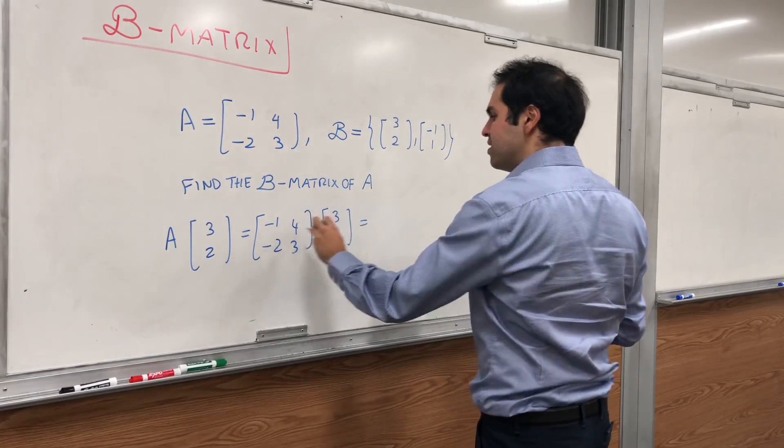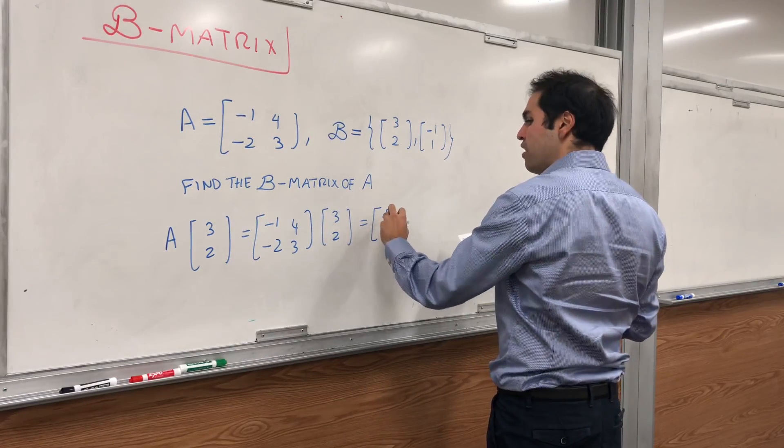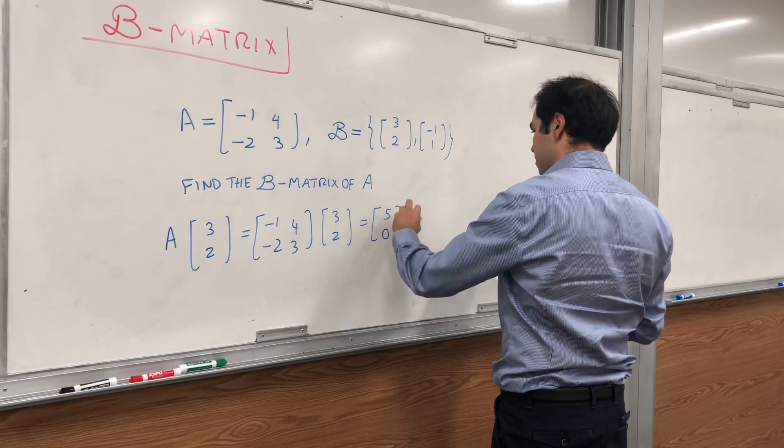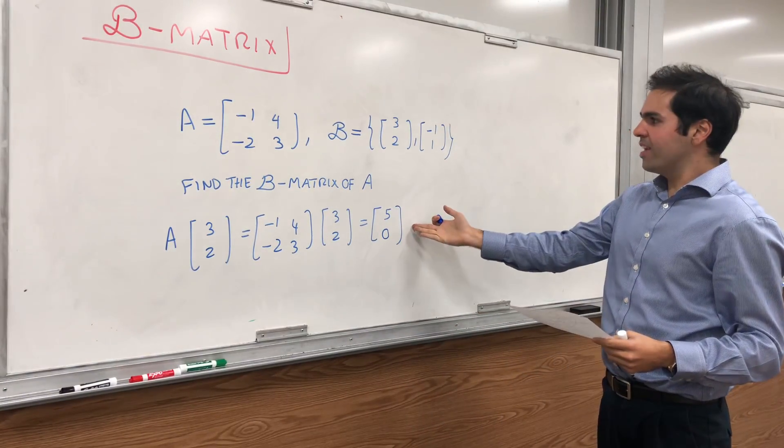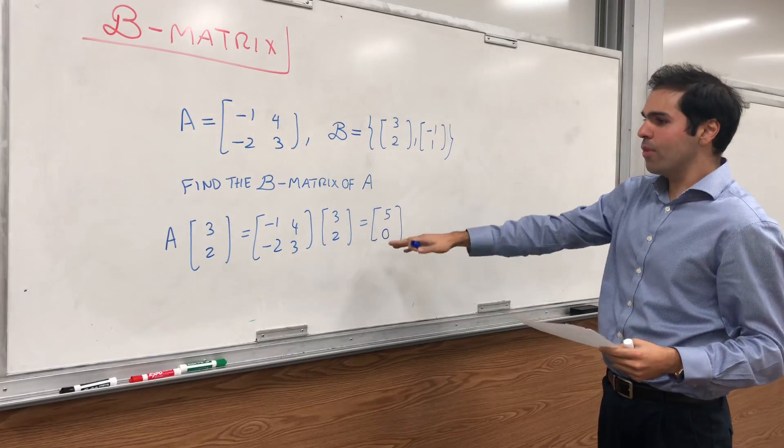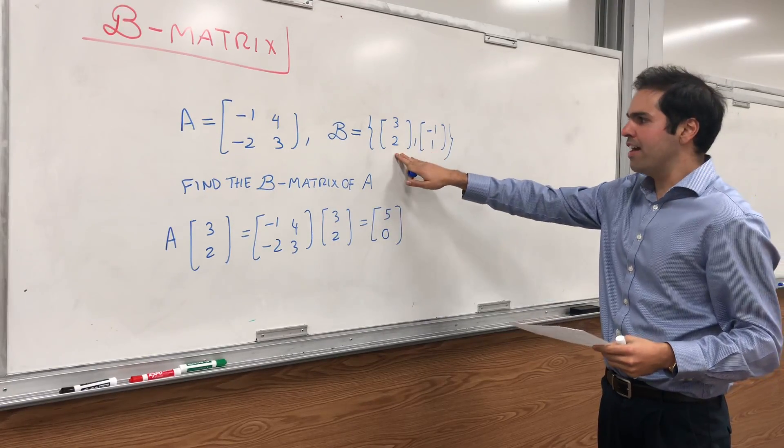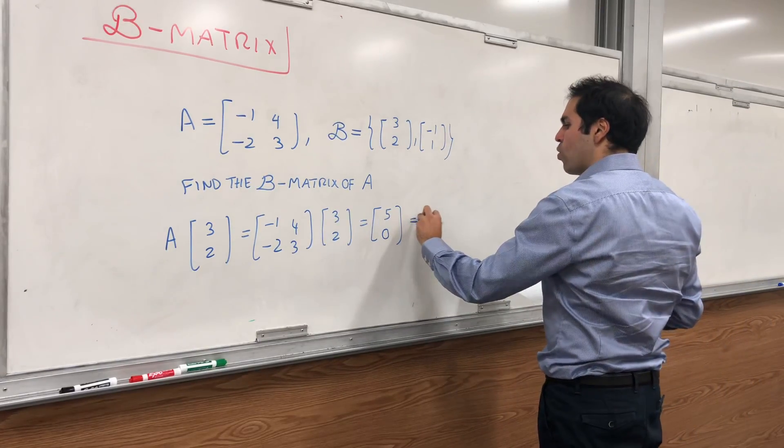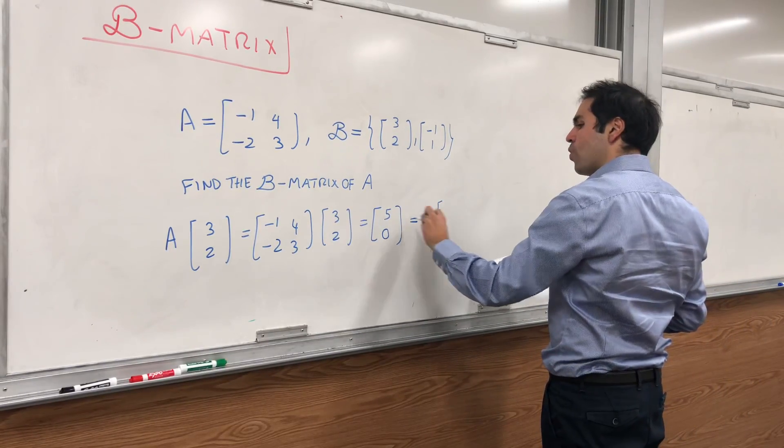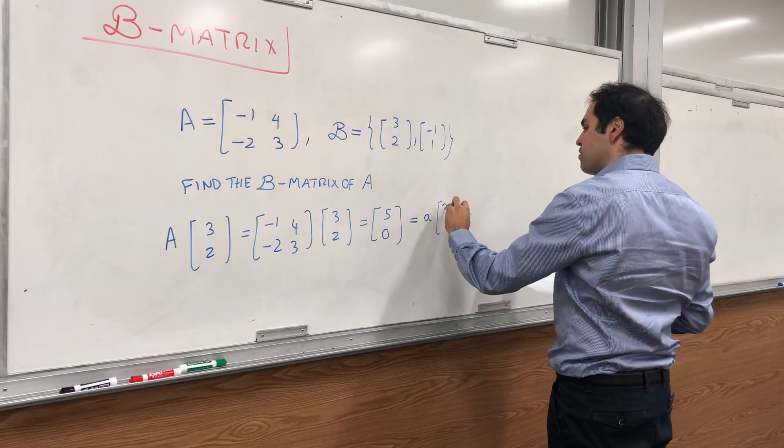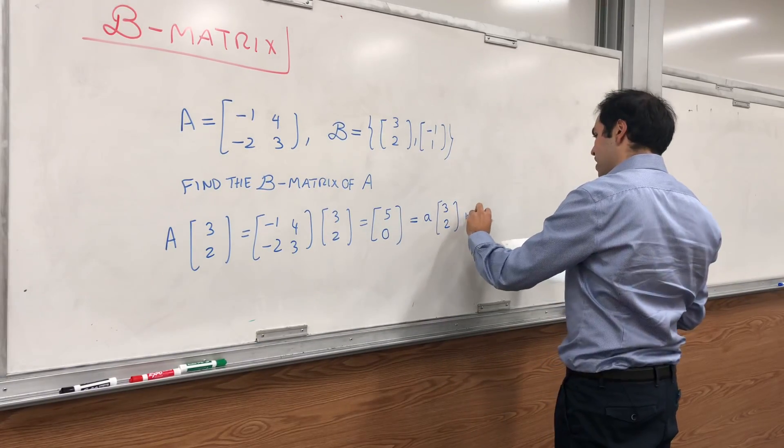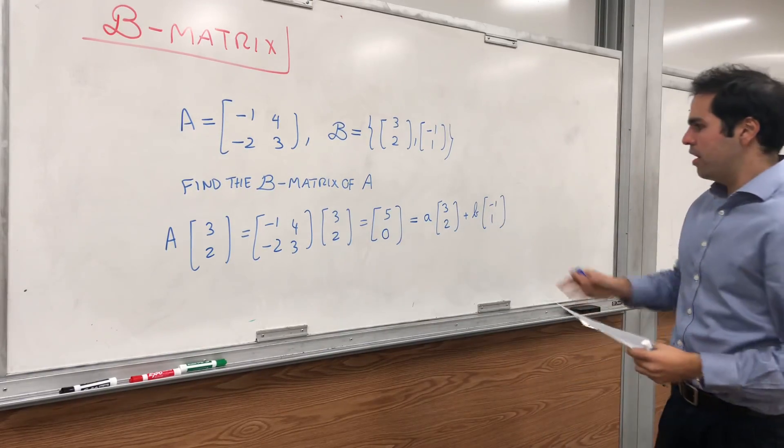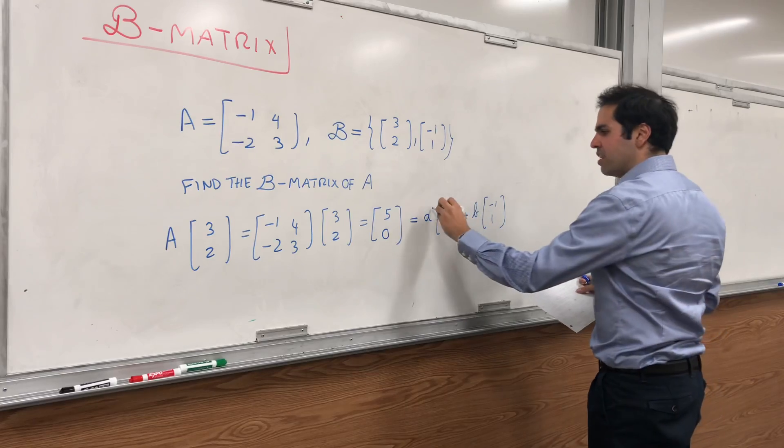And if you do that, you get -3 plus 8, which is 5, and -6 plus 6, which is 0. That's on the one hand. On the other hand, you calculated A of that vector. Now you just want to express it in terms of B. Think in terms of coordinates. So find the coordinates of this vector with respect to this basis: a times (3, 2) plus b times (-1, 1), and we want to find those coefficients.